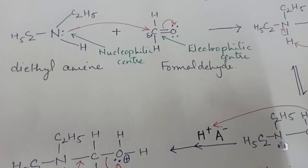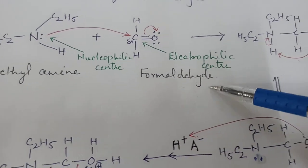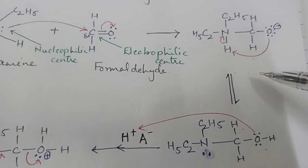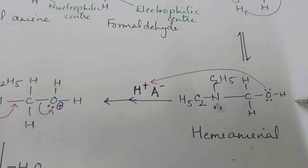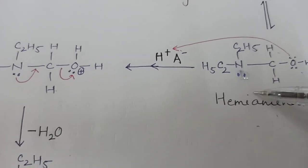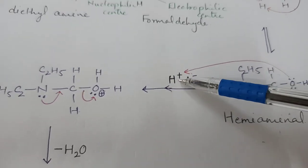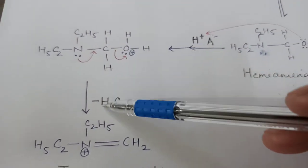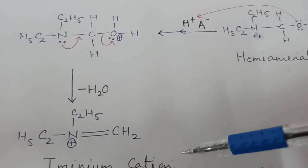So in the first step, diethylamine reacts with formaldehyde: first an addition species is formed, which after transfer of a proton from nitrogen to oxygen is converted into hemiaminal. The hemiaminal accepts a proton, and after proton acceptance it loses a water molecule and is converted into the iminium cation.